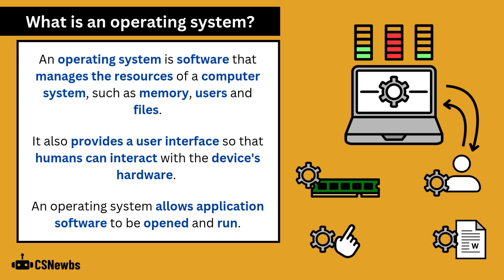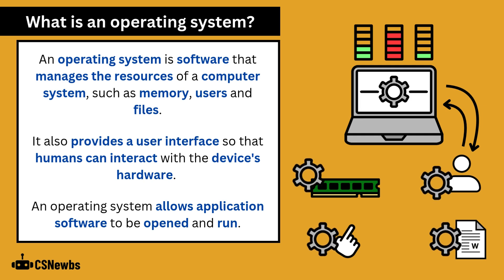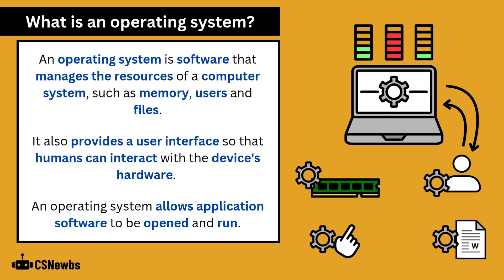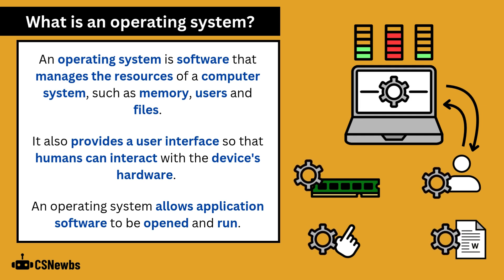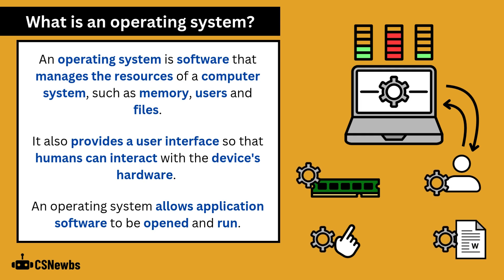Before we look at a network operating system, let's look at this term in general. An operating system is software that manages the resources of a computer system, such as memory, users and files. It also provides a user interface so that humans can interact with the device's hardware. And crucially, for this course, an operating system allows application software to be opened and run.